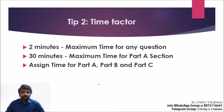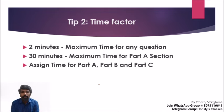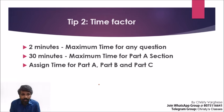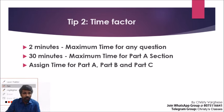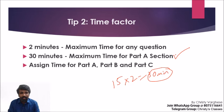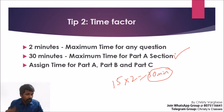The second tip is the time factor. For any question in Part A, the maximum is 2 minutes. If you are taking more than 2 minutes, that is a question you should skip. 2 minutes maximum is a rule to keep. 15 questions at 2 minutes each means a maximum of 30 minutes total for Part A — not more than that.